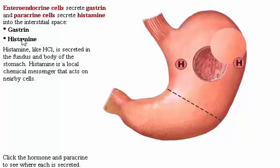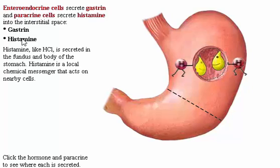Histamine, like hydrochloric acid, is secreted in the fundus and body of the stomach. Histamine is a local chemical messenger that acts on nearby cells. It is secreted into the lamina propria, not the stomach lumen.